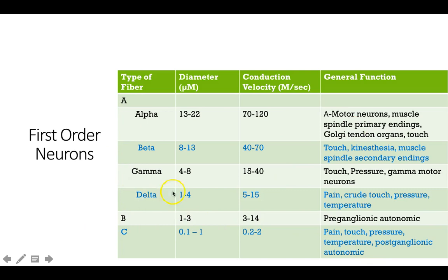We'll actually talk about how stimulating these different fibers can not only transmit pain but potentially control pain as well. The nociceptor activates the A-delta and C fibers, they relay that information to the central nervous system, and that's the interpretation of pain we get once it reaches the higher centers.